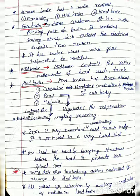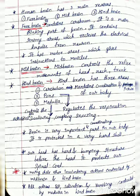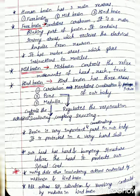The brain is a very important coordinating part in our body. It is protected in a very hard shell. Our head has a hard and bumpy structure which also protects our spinal cord. Other involuntary actions are controlled by the midbrain and hindbrain. Actions such as blood pressure, salivation, and vomiting are controlled by the medulla in the hindbrain. Activities like walking, riding a bicycle, and picking up a pencil are possible due to the part of the hindbrain called the cerebellum.